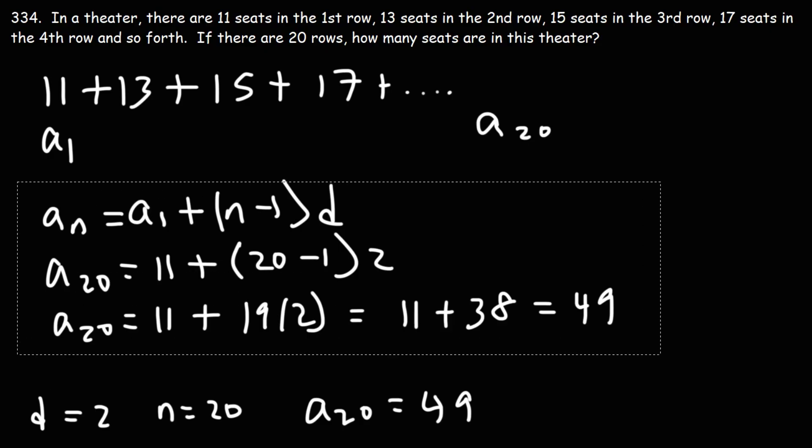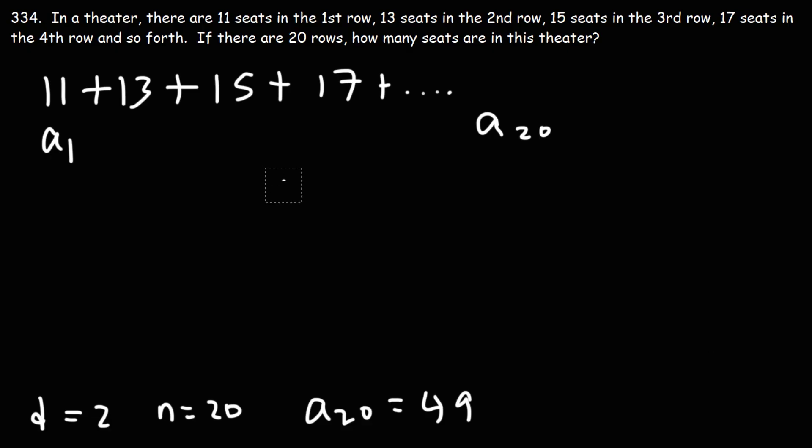Now that we have the value of the last term, or the number of seats in the last row, we can now find the sum. So the sum of the first 20 terms. But let's write the general formula. The partial sum of an arithmetic sequence is equal to the first term times the value of the last term divided by 2 times the number of terms.